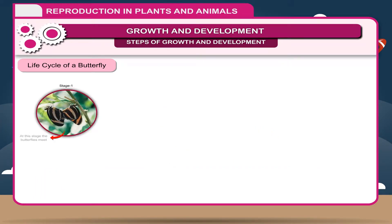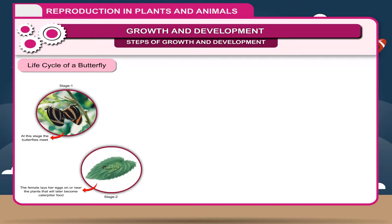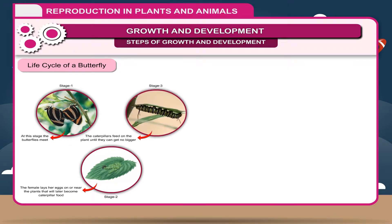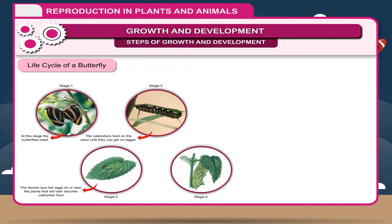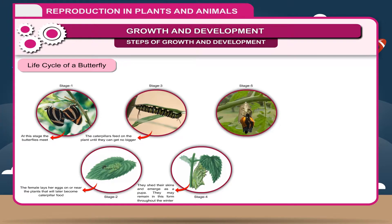Stage 1: The female lays her eggs on or near the plants that will later become caterpillar food. Stage 3: The caterpillars feed on the plant until they can get no bigger. Stage 4: They shed their skins and emerge as a pupa, and may remain in this form throughout the winter. Stage 5: The body of the pupa breaks down during this amazing transformation and reforms itself into a beautiful butterfly that has to break out of its shell.